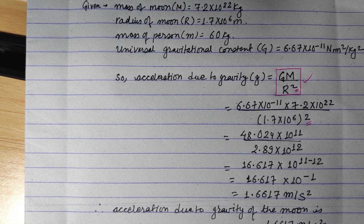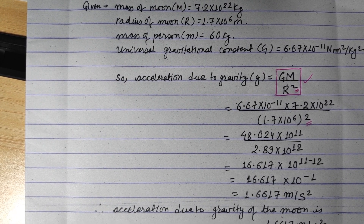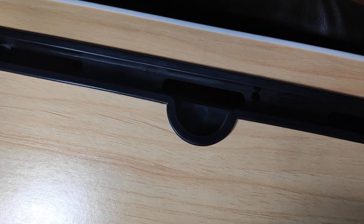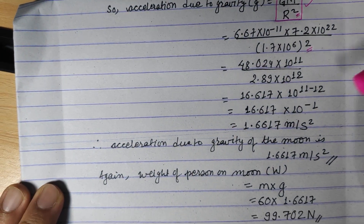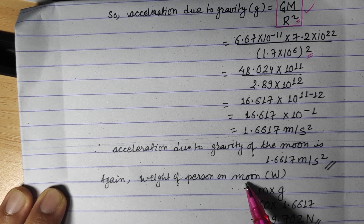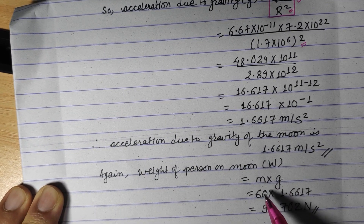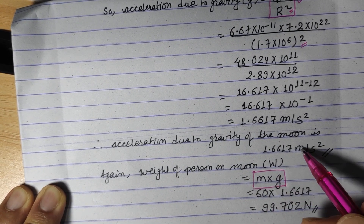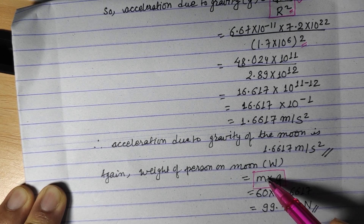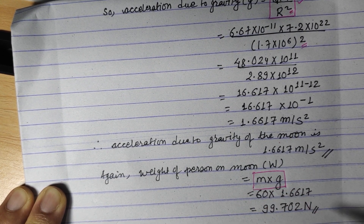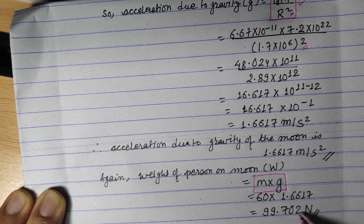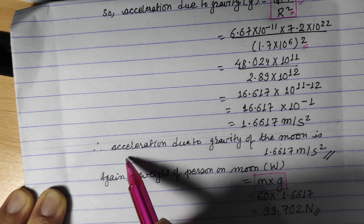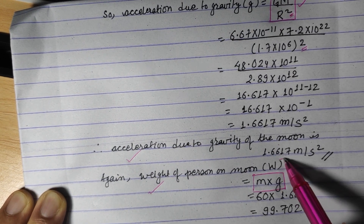Now for the second part: the weight of a person on the moon. Weight equals m into g. With mass 60 kg and g of the moon as calculated, the weight of the person on the moon is approximately 99.7 Newton. The SI unit of weight is Newton.